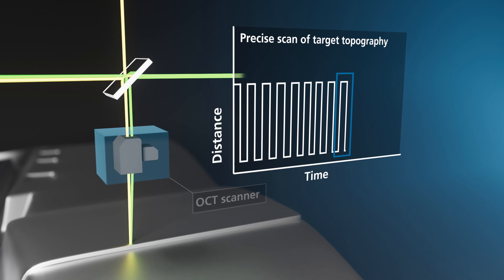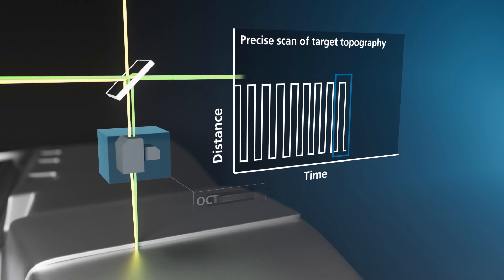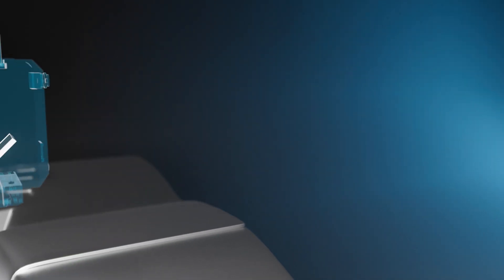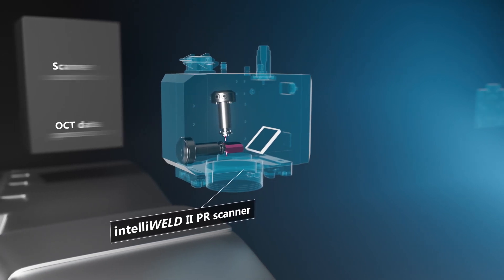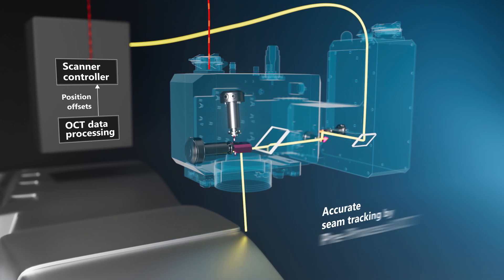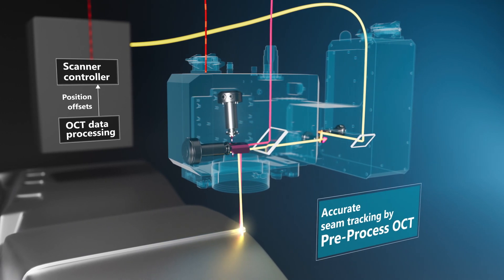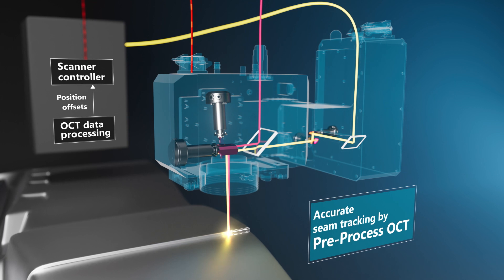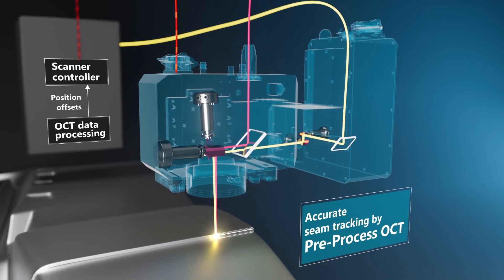For example, when performing a fillet weld, the position of the joint's edge can be accurately located and in turn the control signals sent to the IntelliWeld scanner are updated so that the laser beam always hits the edge perfectly, resulting in the best possible seam quality.